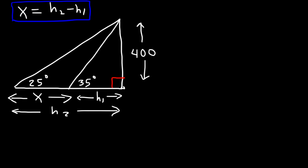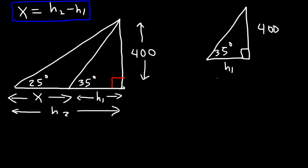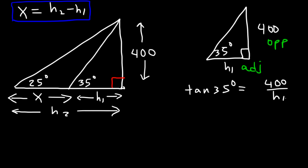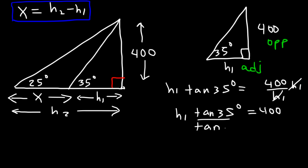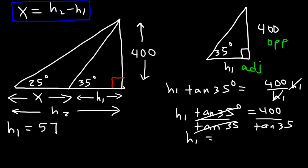Let's start with the small triangle. This side is 400 and the angle is 35 degrees; 400 is opposite the angle and h1 is adjacent. So tan(35) = 400 / h1. Multiplying both sides by h1 gives h1 × tan(35) = 400. Dividing both sides by tan(35), h1 = 400 / tan(35) = 571.26.